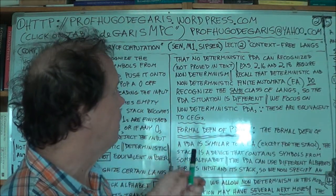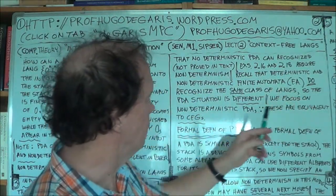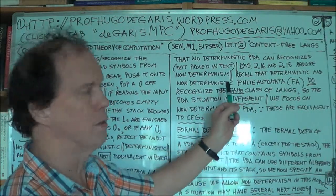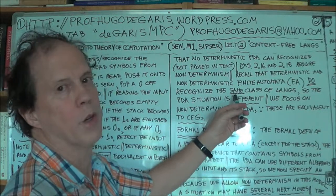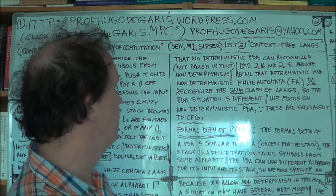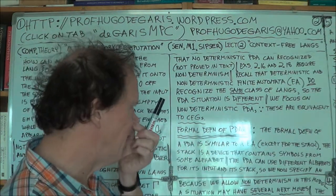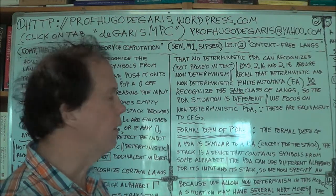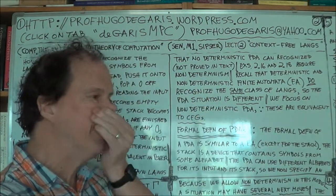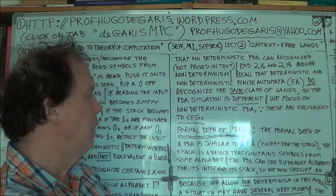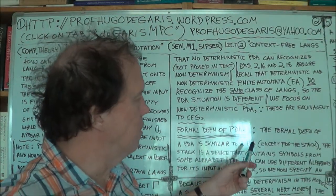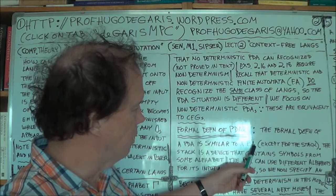Here's a reminder: in the case of finite automata, the deterministic and non-deterministic forms do recognize the same class of languages, so they're equivalent — we proved that in earlier lectures, even though it was a bit surprising. But that's not the case with PDAs. Now, the formal definition of a PDA: it's similar to what we've already done. Remember the five-tuple of a finite automaton? It's much the same, but of course we're now talking about PDAs — push-down, stack-based automata — so similar to the finite automaton, except for the stack.